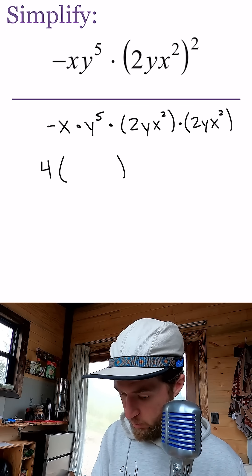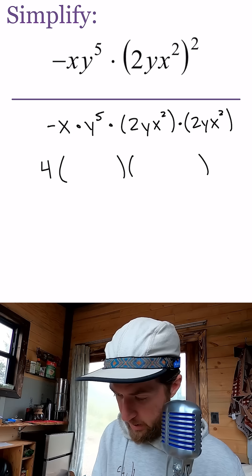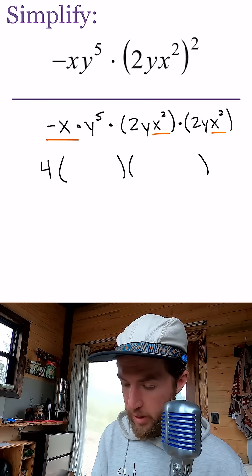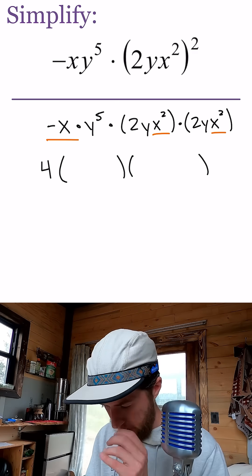And then we'll do all our x's here and we'll do all our y's here. So we have a negative x, we have an x squared, and we have an x squared. So x squared times x squared is x to the fourth times a negative x, so we have negative x to the fifth.